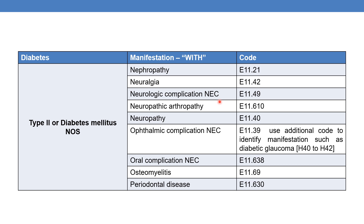For neuropathy, the code is E11.610. For simple neuropathy — diabetes mellitus with neuropathy — the code is E11.40. For ophthalmic complication NEC, the code is E11.39, and you need to use an additional code to identify the manifestation such as diabetic glaucoma. Glaucoma codes come under category H42. Note that you cannot find glaucoma directly under 'with' — you need to check the instructional note in the tabular index.